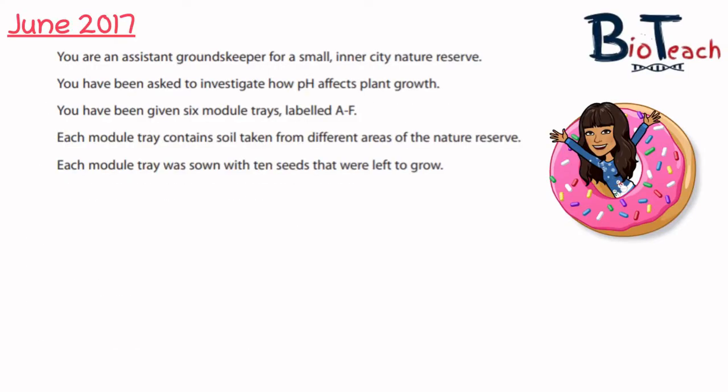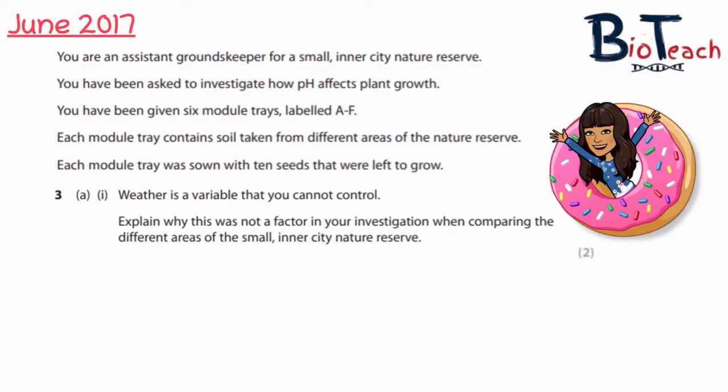For June 2017, part A was about being an assistant groundkeeper in a small inner city nature reserve, where you were asked to investigate how pH affects plant growth and how you needed to set up your trays. Question number three, the first part, asked about why weather was not a factor in the investigation when comparing the different areas of the small inner city nature reserve.